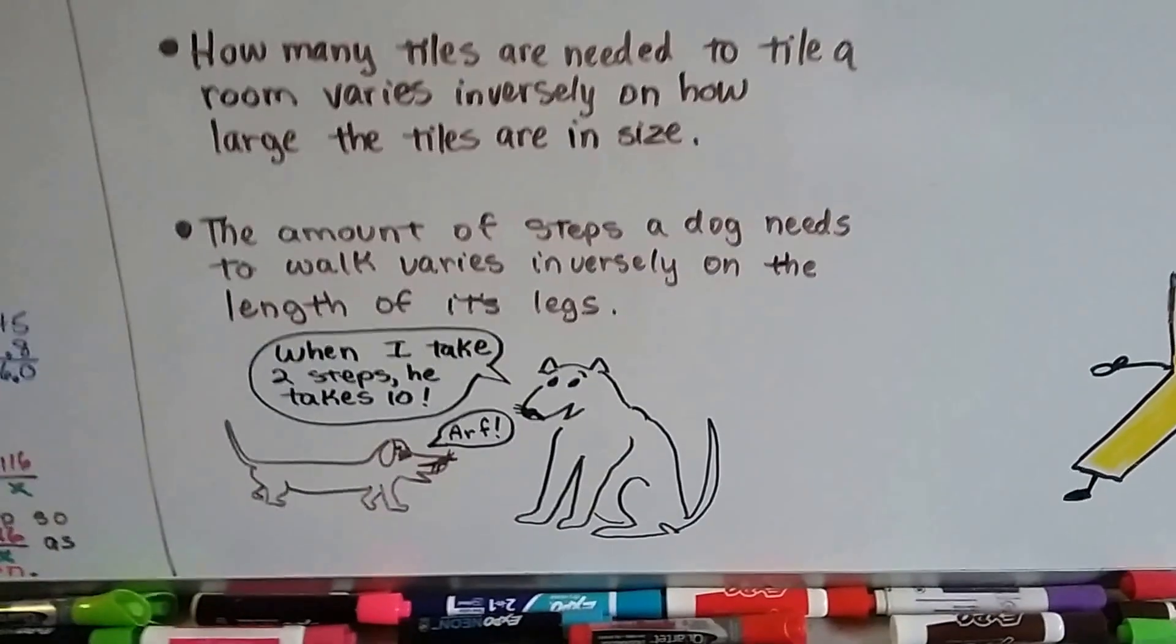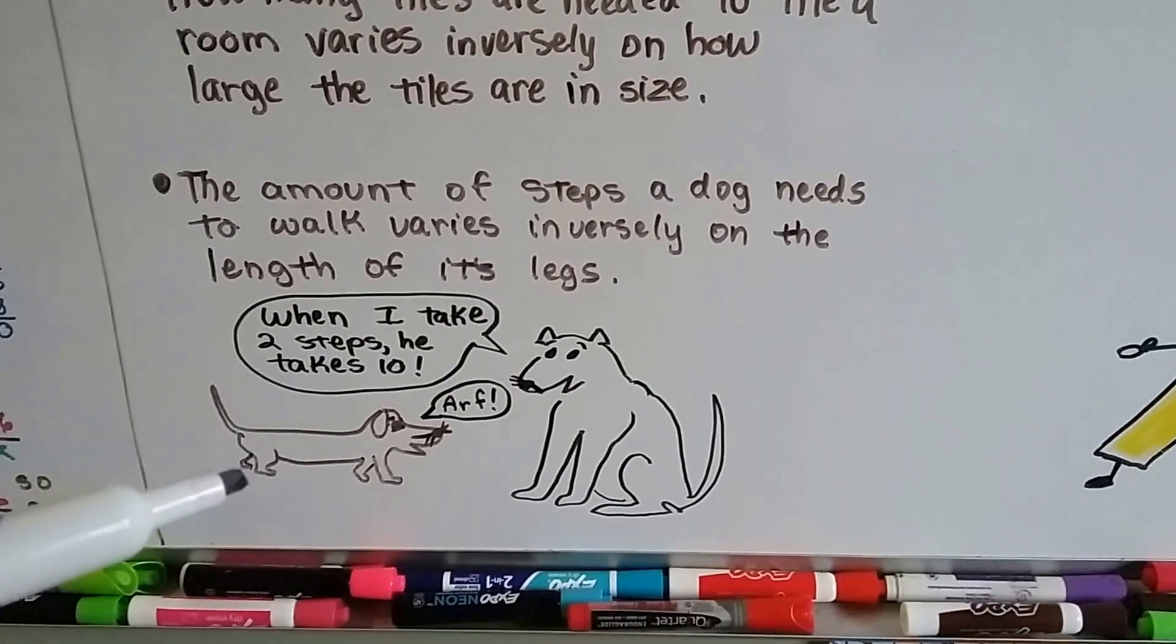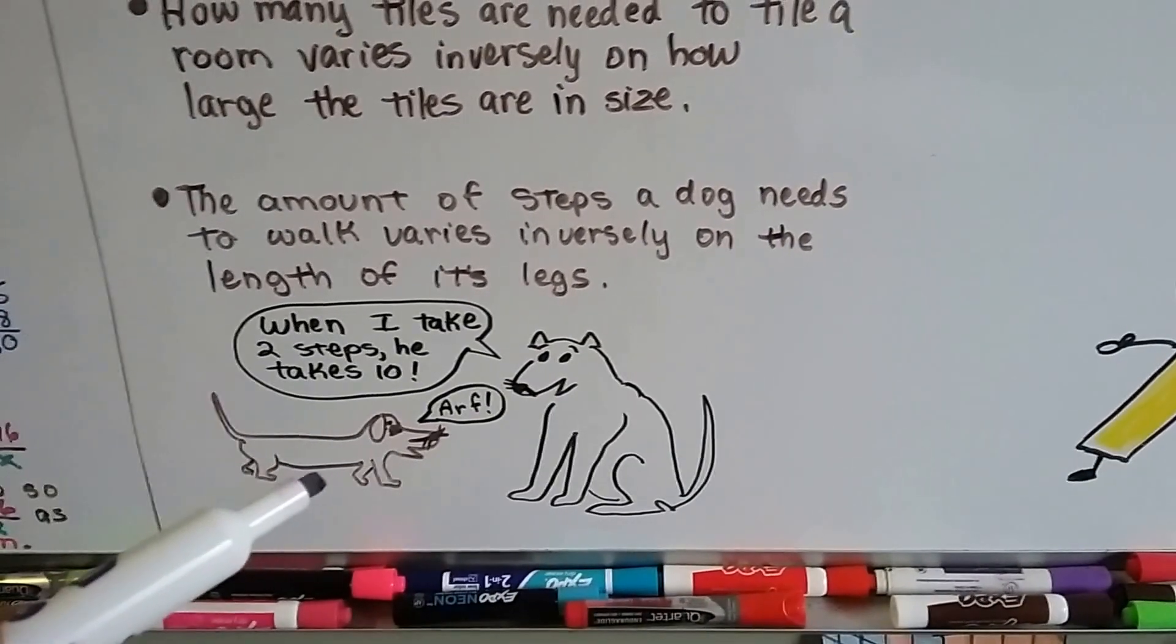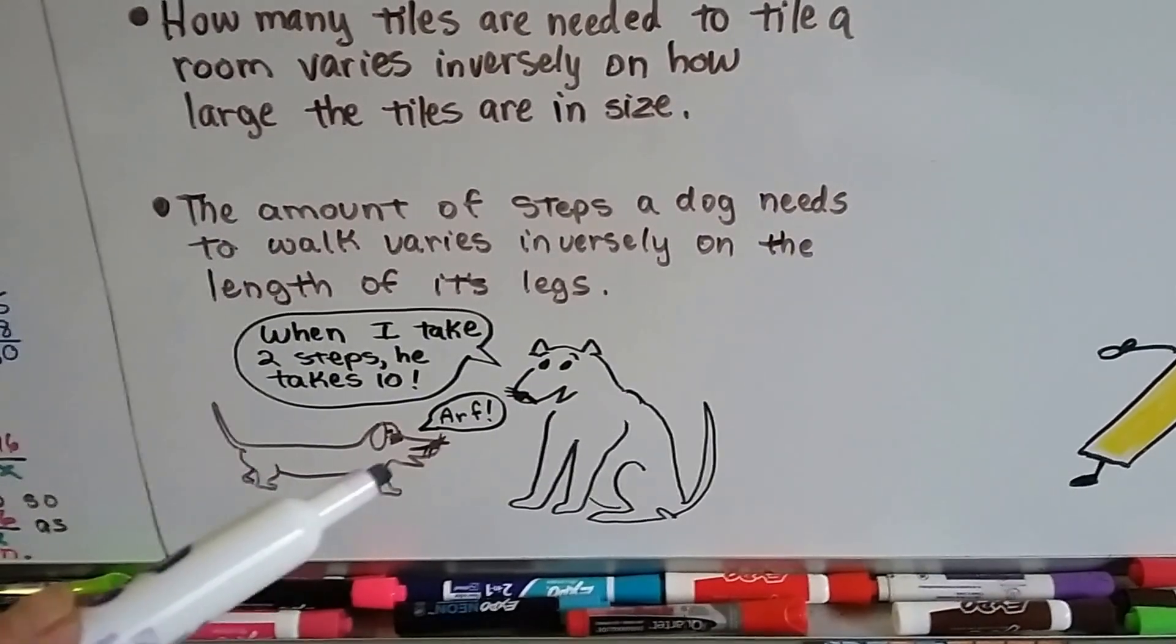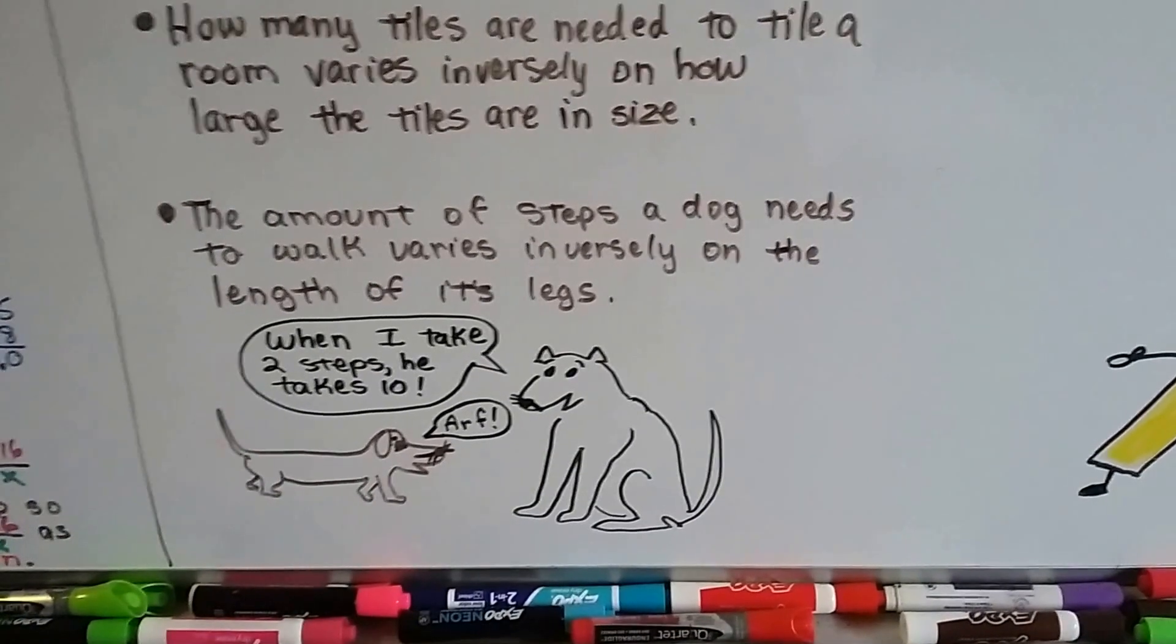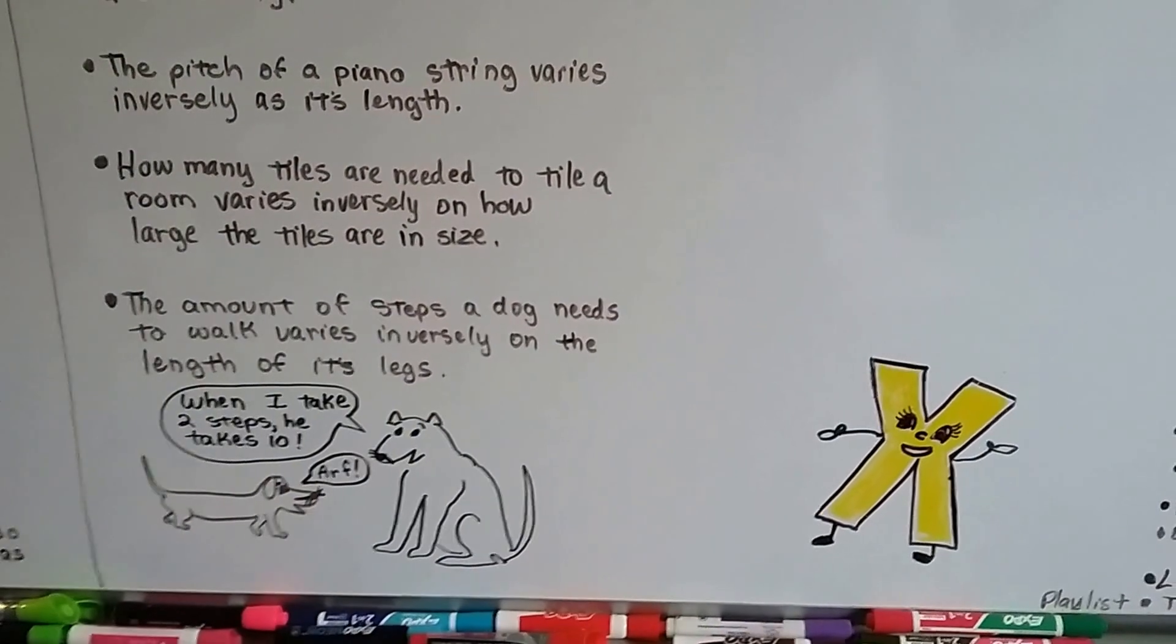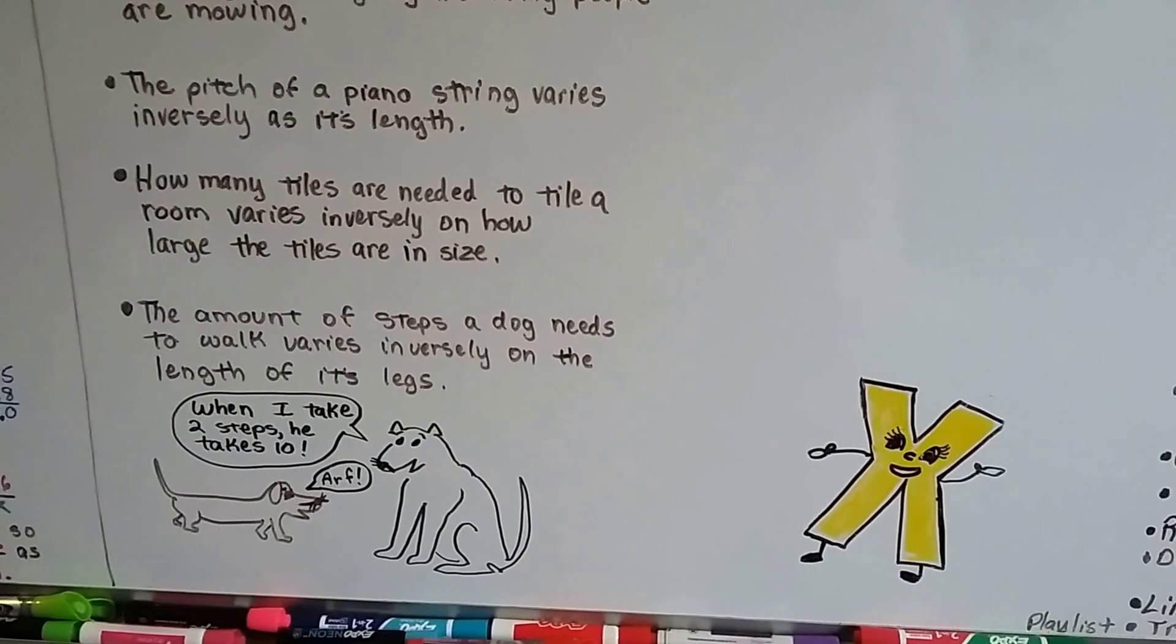How about the amount of steps a dog needs to walk varies inversely on the length of its legs. A little dachshund, it's got little short legs, and to walk the same distance as this big dog, it's going to have to take lots of little tiny steps. So there's going to be more steps with less height. If there's more height to the legs, he's going to take less steps. That varies inversely. Or a little two-year-old walking compared to an adult walking. A little two-year-old is going to take a lot more steps because the legs are shorter.